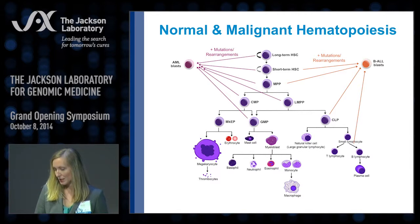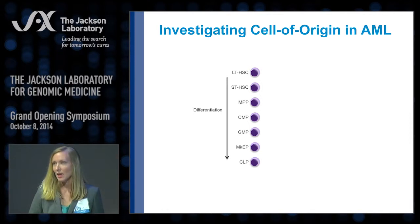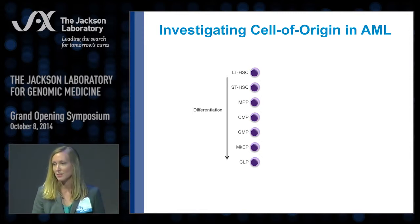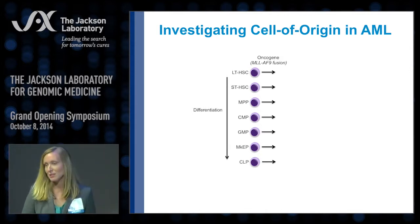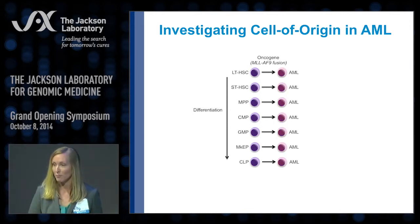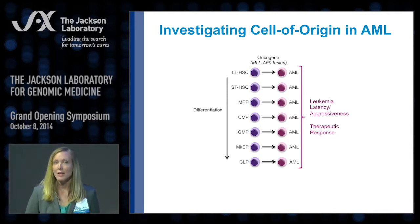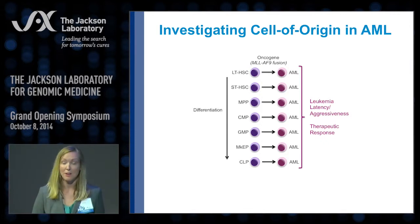In my laboratory, we're interested in investigating the question of cell of origin in acute myeloid leukemia. The initial experiments we did were to isolate various populations of stem and progenitor cells and induce expression of a common oncogene. We chose the fusion protein MLLAF9, which is known to drive AML. We asked: of the AMLs that form from these distinct cell types of origin, is there a role for cell of origin in the latency or aggressiveness of disease, as well as the response to different therapies — conventional chemotherapy or experimental therapies?